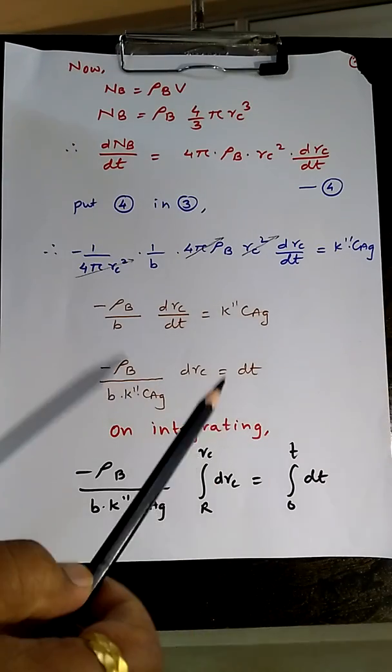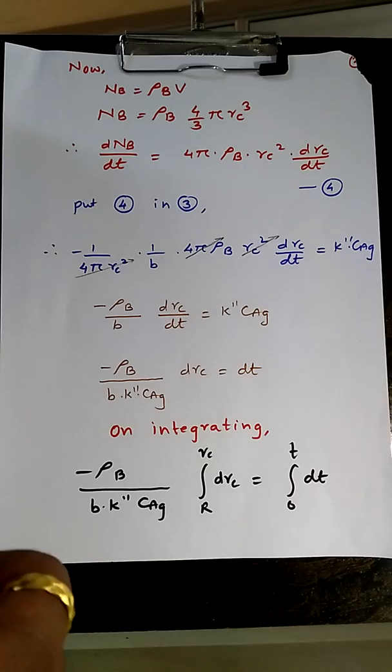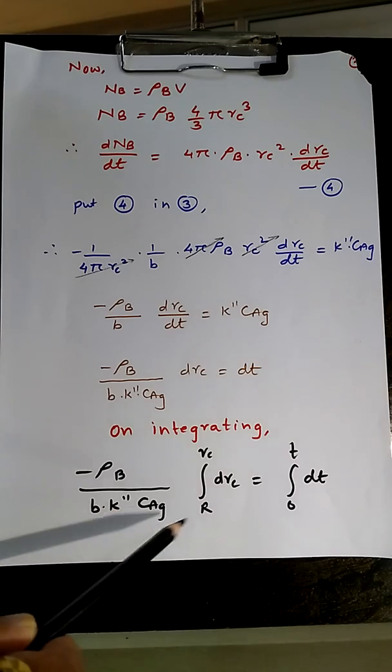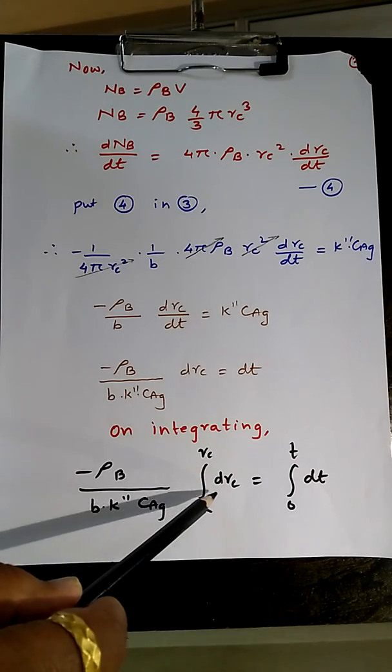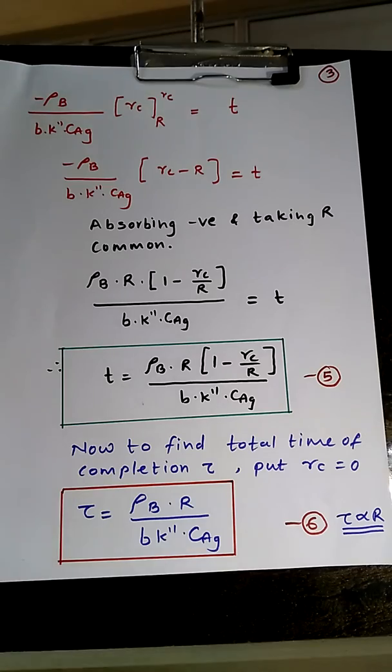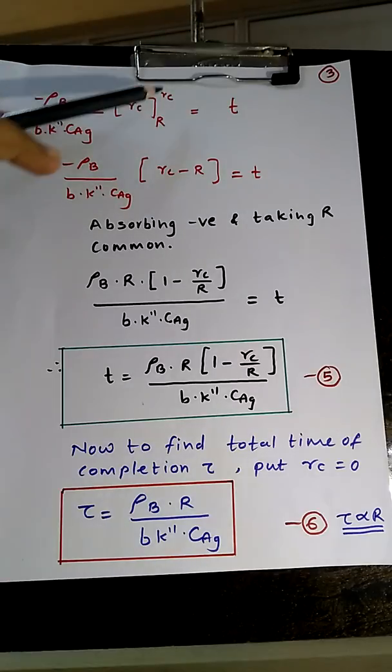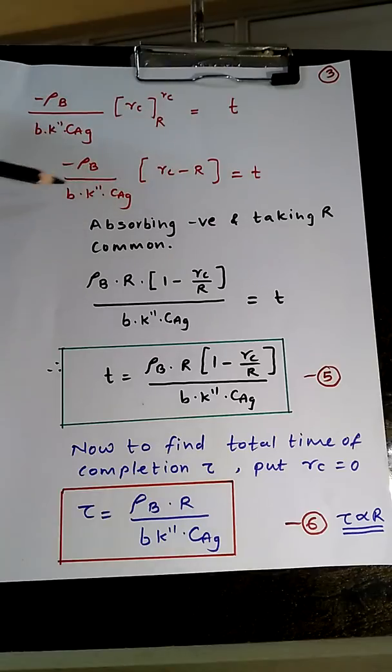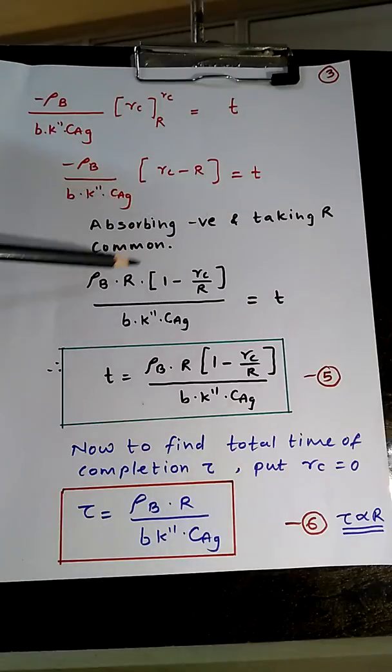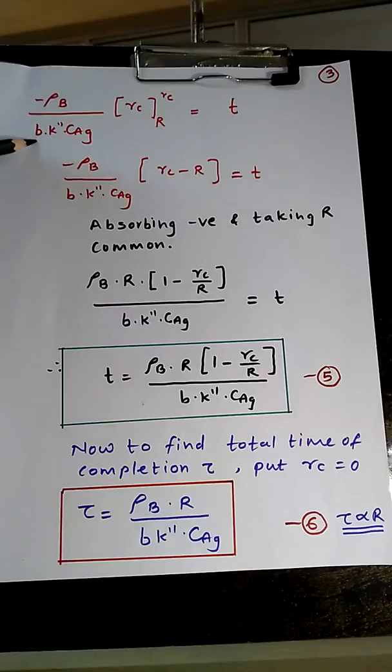Now by variable separable method you can separate out Rc and time. And thus after integration you get -ρB/(bk''CAG) integral from R to Rc of dRc equals integral from 0 to t of dt. So after integration we get -ρB/(bk''CAG) × Rc within the limit R to Rc which equals t. Now you can substitute the limits, so it will be Rc minus R. Then you can absorb the negative sign and take R common. So it will be ρB R (1 - Rc/R) / (bk''CAG) = t.